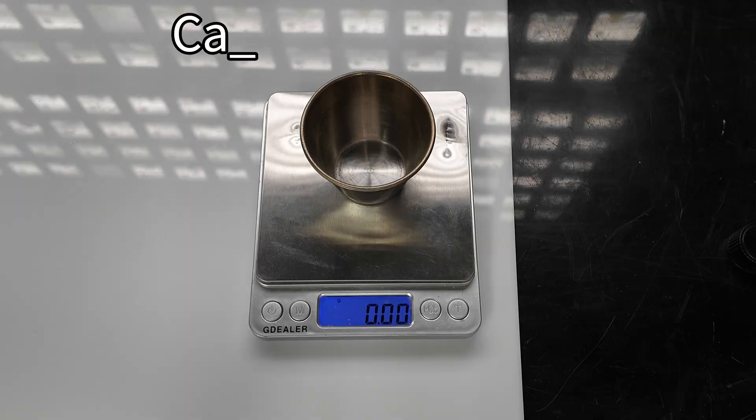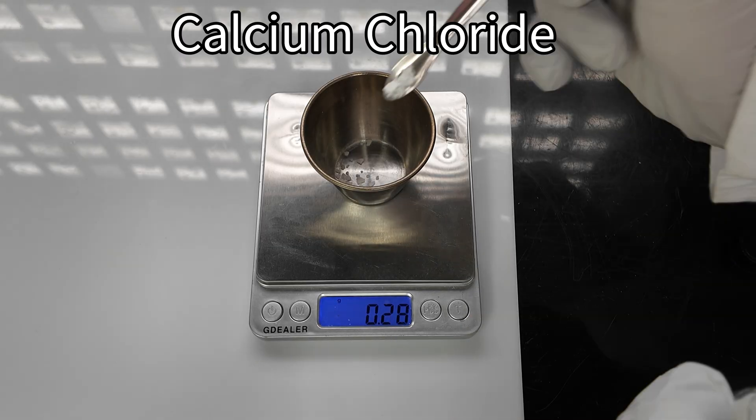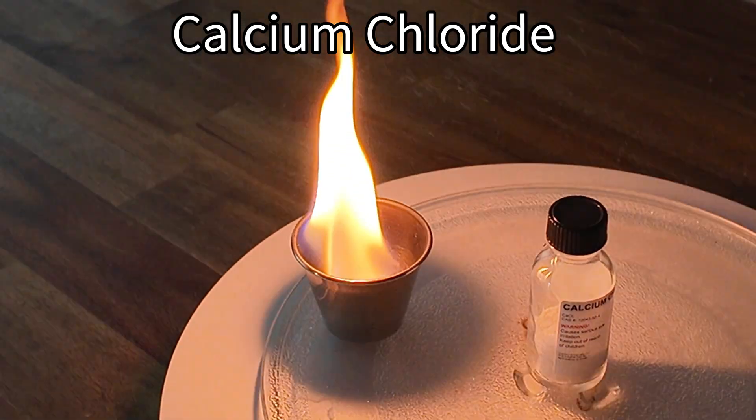So let's start with calcium chloride. As you can see, it is a very intense orange-red hue.